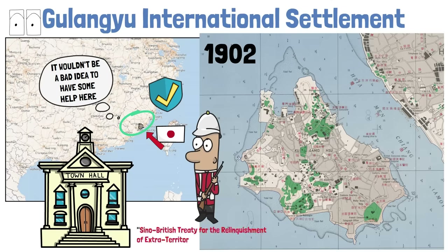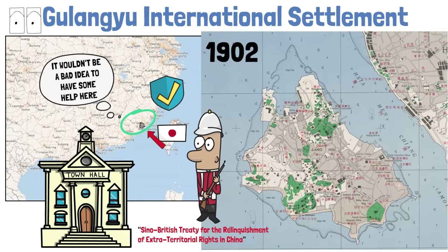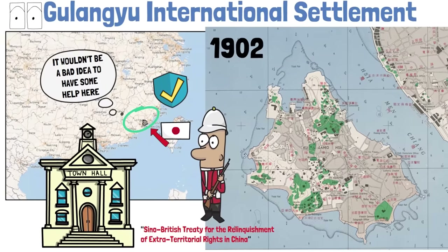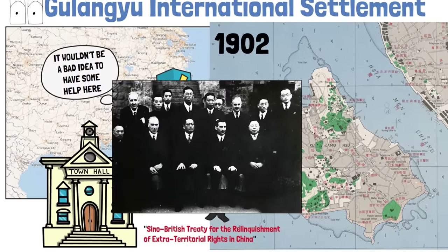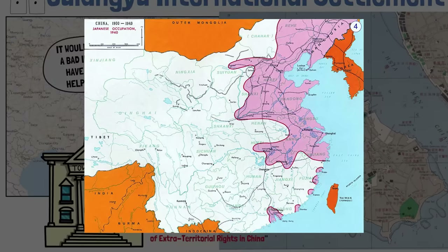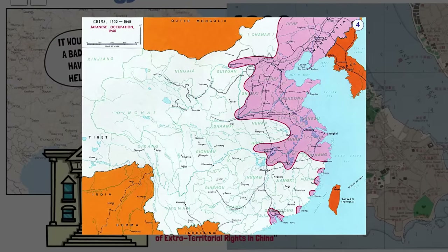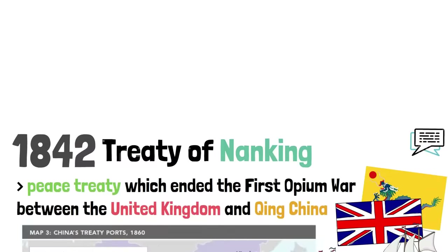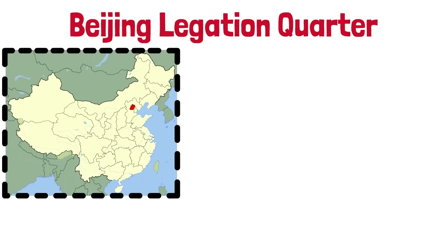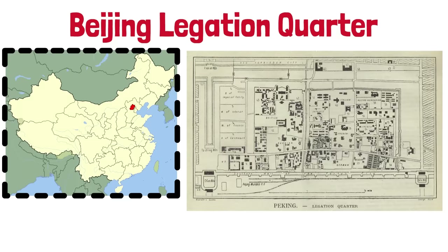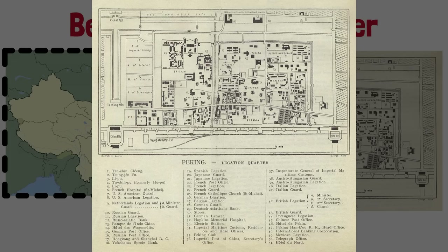It also came to an end with World War II, as did most concessions in China, especially the British. In 1943, there was a Sino-British treaty for the relinquishment of extraterritorial rights in China — although it's important to mention that most British land in China at this point was already occupied by Japan, so it wasn't that hard for them to give them up. The Beijing Legation Quarter was different — it was the area in Beijing where a number of foreign legations were located.